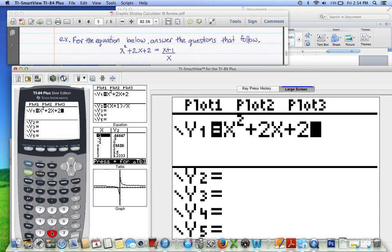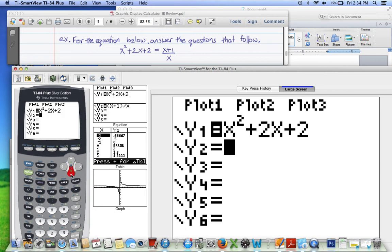And after you finish graphing the left side in Y1, we can go ahead and graph the right side in Y2. Now you'll notice that it's a fraction, x plus 1 over x. There is no parentheses in the fraction.